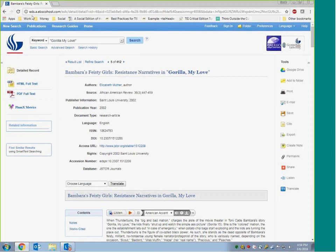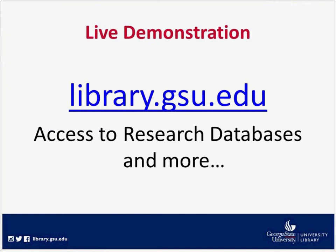Sometimes within the article record page you might see an abstract that lets you know what the article covers — this one doesn't appear to have one, probably because it's pulling from JSTOR, the one we just looked at. But in other cases you may see an abstract, which can help save time in determining what's useful for you. To summarize: we looked at JSTOR, which is a little broader, and Discover, which searches pretty much everything. In some cases it may just be easier to go straight to those literary databases and use them.